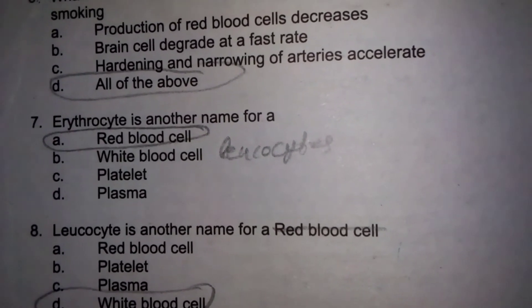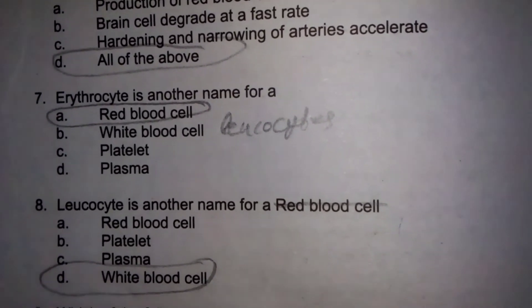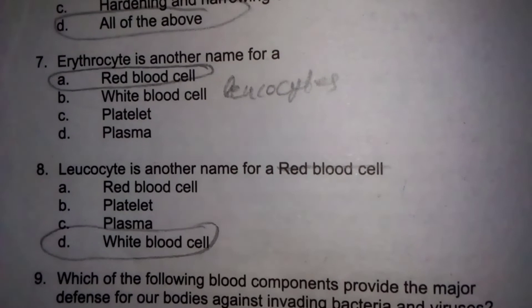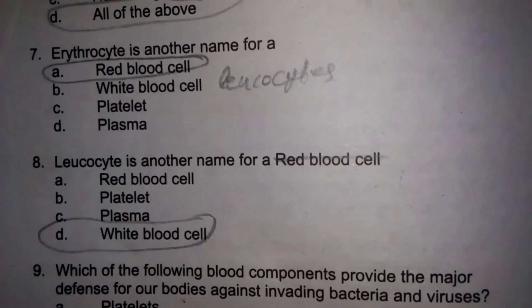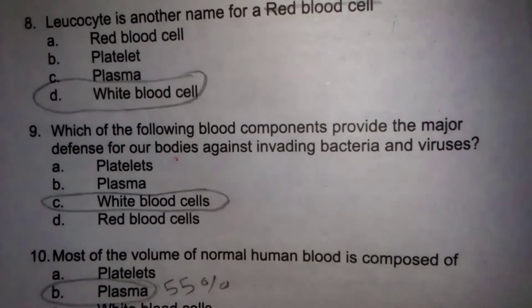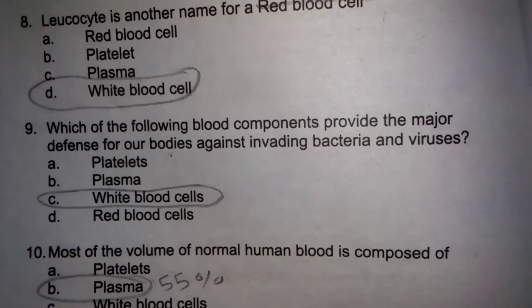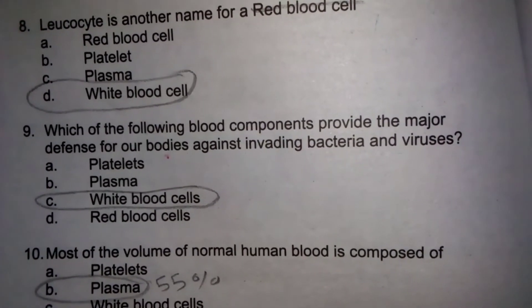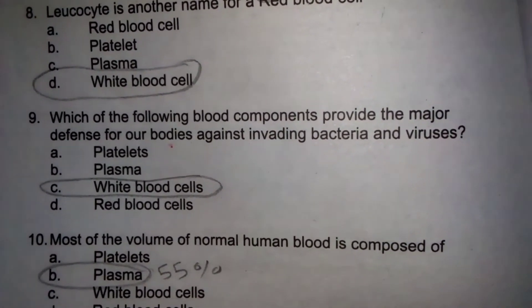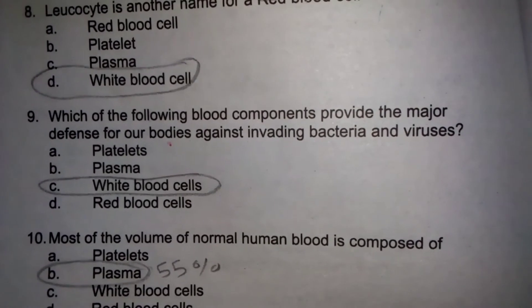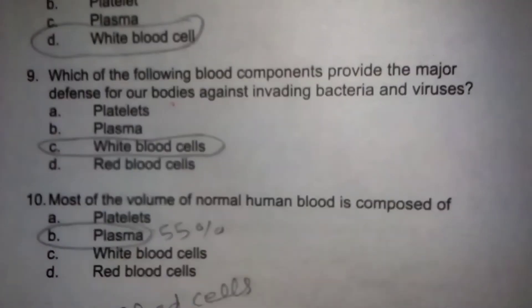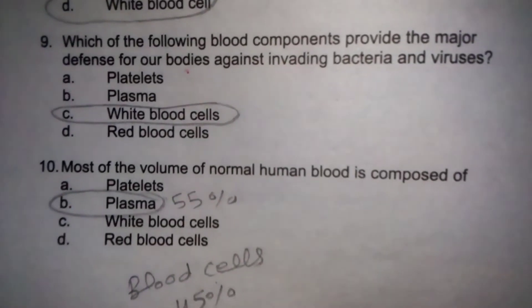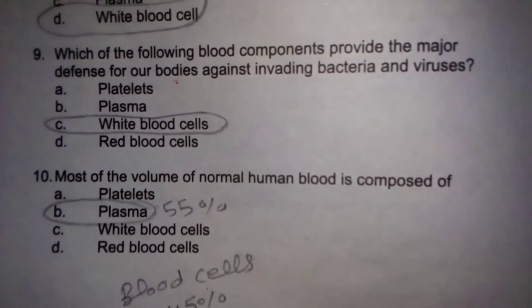White blood cells کو leukocytes بھی کہا جاتا ہے۔ Leukocyte is another name for white blood cell. Which of the following blood components provide the major defense for our bodies against invading bacteria and viruses? White blood cells یہ defense mechanism میں کام کرتے ہیں۔